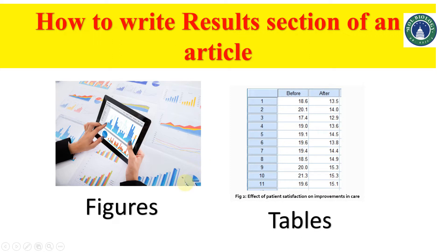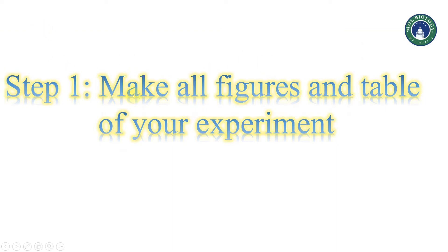To further understand figures and tables, we should understand how the arrangement of results sections usually goes in any published article or manuscript. In step one, make all the figures and tables of your experiments. For example, if your experiment has three figures and two tables, you first need to decide how many figures and how many tables you want to include as per the main part of your experiments.